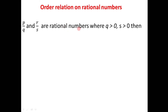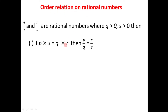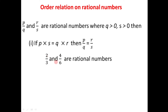Let us illustrate these three rules. For the first rule — if p times s equals q times r then both numbers are equal — suppose we have two rational numbers 2 divided by 3 and 4 divided by 6. Taking the product of 2 and 6 gives 12, and the product of 3 and 4 also gives 12. Since these two products are equal, the two numbers must be equal: 2 divided by 3 equals 4 divided by 6.